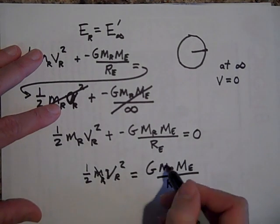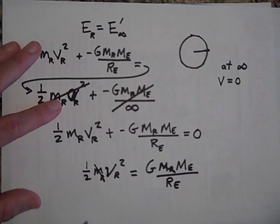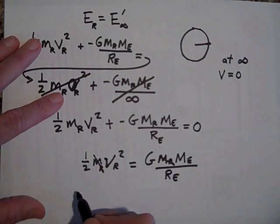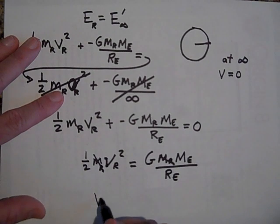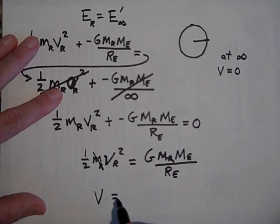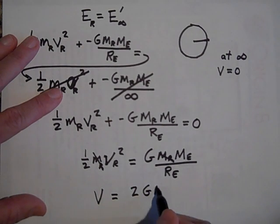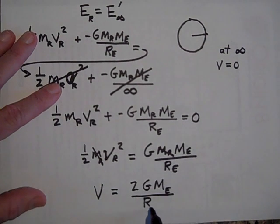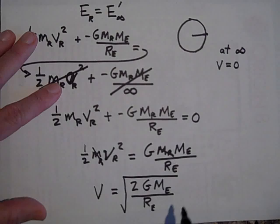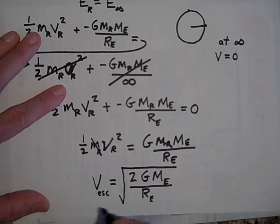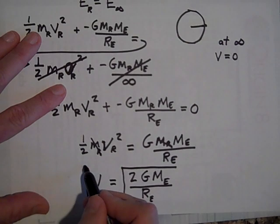The mass of the rocket cancels out. Multiplying both sides by 2 and taking the square root, the escape velocity equals the square root of 2 times G times the mass of the planet divided by the radius of the planet. This is the escape velocity formula.